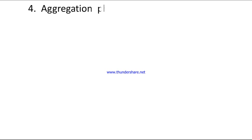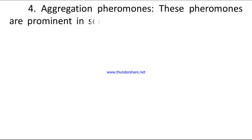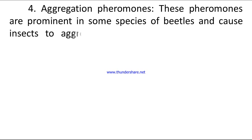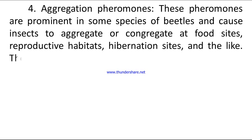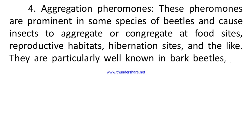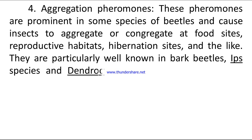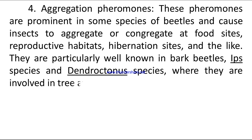Number four: aggregation pheromones. These pheromones are prominent in some species of beetles and cause insects to aggregate or congregate at food sites, reproductive habitats, hibernation sites, and the like. They are particularly well known in bark beetles, Ips species, and Dendroctonus species, where they are involved in mass attacks.